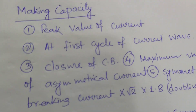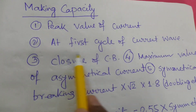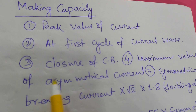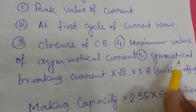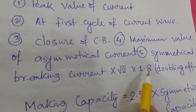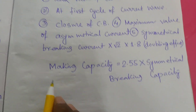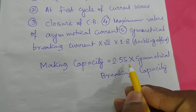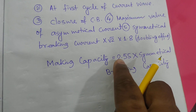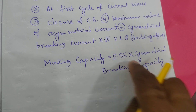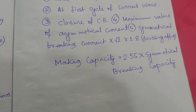Now let's discuss the Making Capacity of the breaker. It is the peak value of the current at the first cycle of the current wave upon closure of the Circuit Breaker — the maximum value of the asymmetrical current. Making Capacity equals symmetrical breaking current × √2 × 1.8 (doubling effect), which gives Making Capacity = 2.55 × symmetrical breaking capacity.